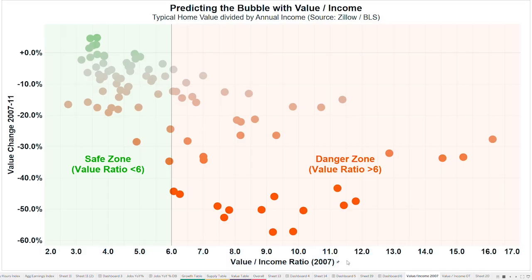If you go back to 2007, the markets with the highest value-to-income ratio — that is, values way above incomes — those markets had the biggest decline. Some even lost 30, 40, 50% of value over the next four years. Meanwhile, the markets where the value-to-income ratio was lower saw much less damage. You can see this on the graph, which compares the change in home prices in each market from 2007 to 2011 against what the value-to-income ratio was in that market in 2007. The relationship is clear: the higher the ratio in 2007, the more prices declined.